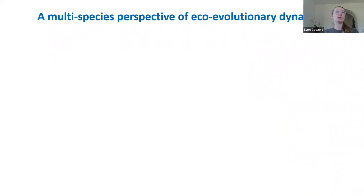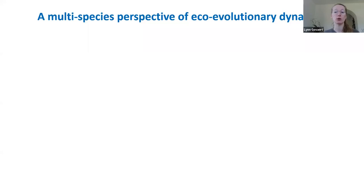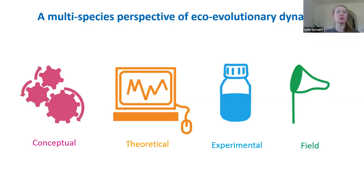Many studies provide evidence of rapid evolutionary changes that can alter ecological dynamics. However, a lot of studies in eco-evolutionary dynamics focus on a single species or evolutionary responses in a single species. It remains largely unknown how eco-evolutionary dynamics play out in multi-species settings, in which multiple species can simultaneously evolve to environmental changes. This is the main aim of my research.